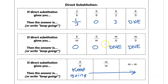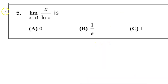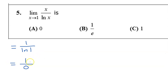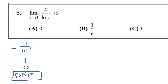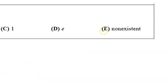So let's apply this to problem number 5. Let's do direct substitution — let x equal 1. The limit should equal 1 over the natural log of 1. The natural log of 1 is 0, and as we just discussed, a number over 0 means the limit does not exist. So the answer is E.